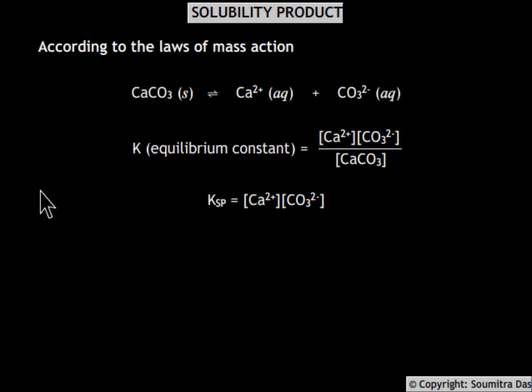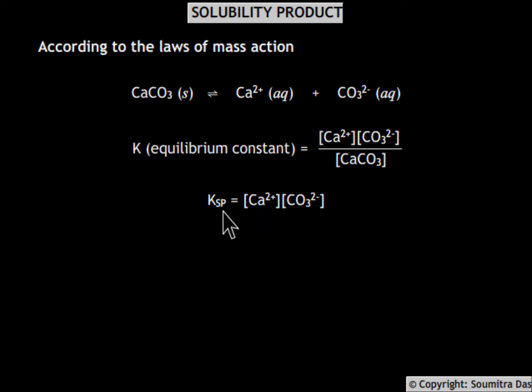According to the laws of mass action, the equilibrium constant is equal to this value. But the concentration of a solid is taken as constant, because the concentration of a solid does not change in the case of heterogeneous equilibrium. Therefore, the product of the ionic concentrations of the anion and cation is constant and is called Ksp, or the solubility product.